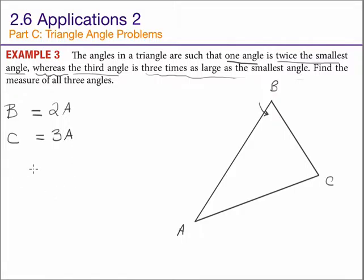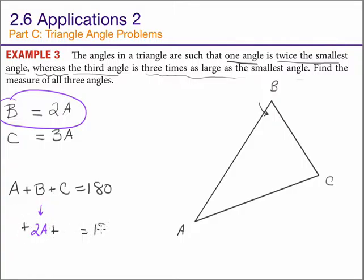That fact from geometry that we were working with a minute ago, the sum of all three angles in any triangle will always be equal to 180 degrees. A plus B plus C is 180. But look. Here's a different way to write B. B can be written 2A. And C, well, C can be written a different way as well. C can be written as 3A.